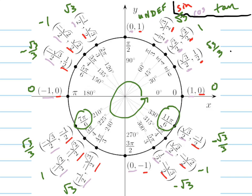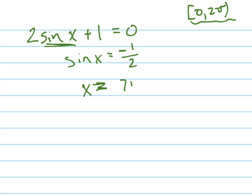Because remember, the sine is your y coordinate. So when is the y coordinate negative 1 half? 7π over 6 and 11π over 6. So that's your answer. 7π over 6, 11π over 6. Done.